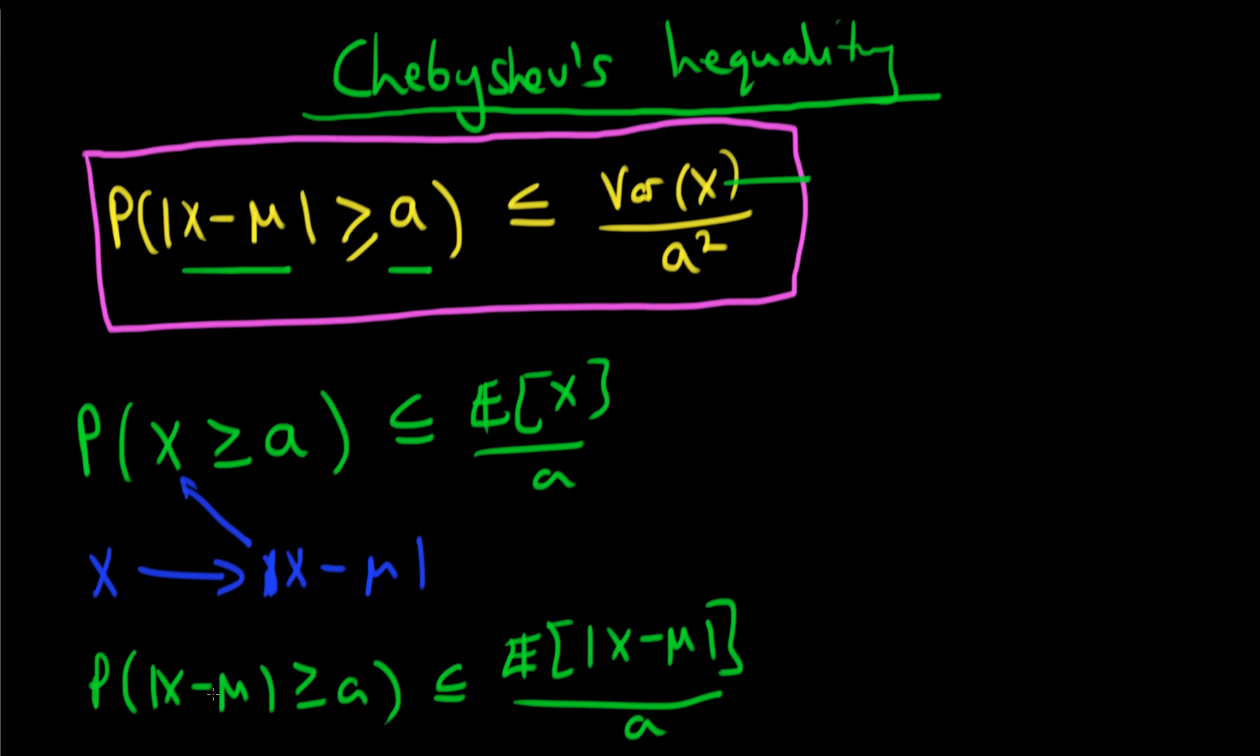So this is starting to look a little bit similar to what we've got above, but the problem is the right-hand side looks a bit different. We can make it quite similar though if we realize that we can write the probability of the modulus of x minus μ being greater than or equal to a is actually identical to the probability that x minus μ all squared is greater than or equal to a squared.